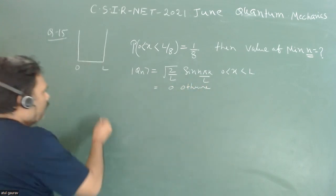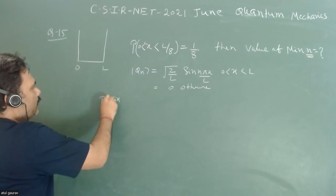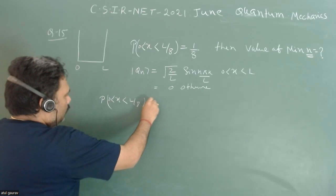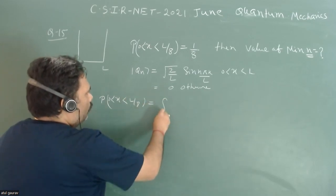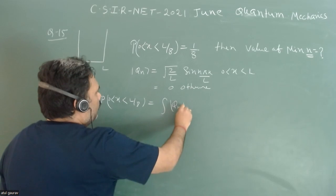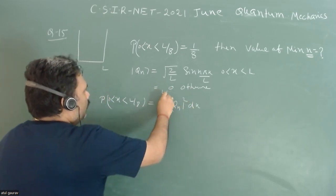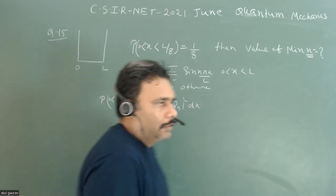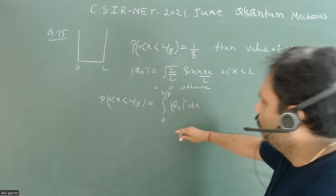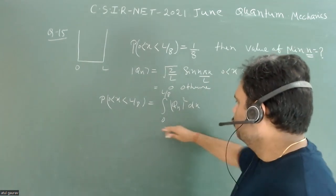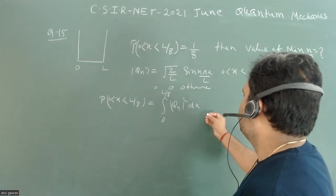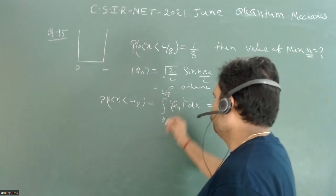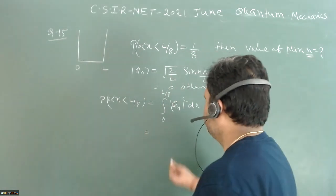It is given that the probability such that x is between 0 to L/8 is equivalent to the integral from 0 to L/8 of |phi_n|^2 dx. We have taken this normalized, so there is no need to calculate the denominator part - that will be 1 itself. And this value is equal to 1/8.